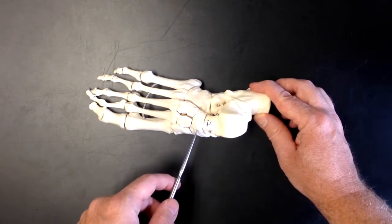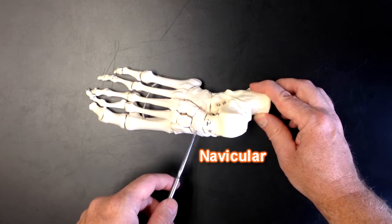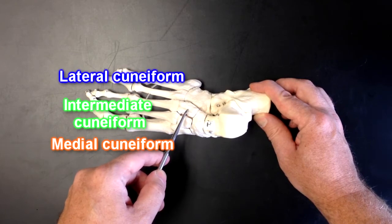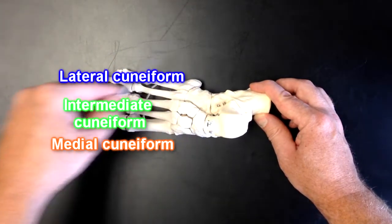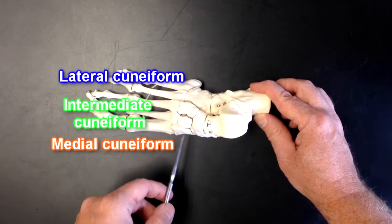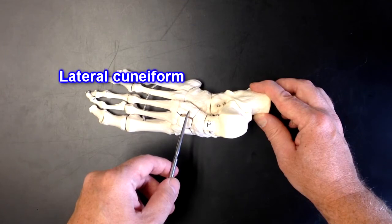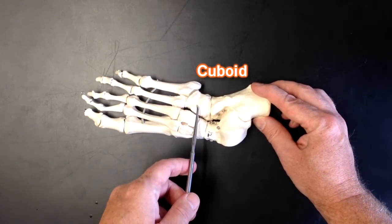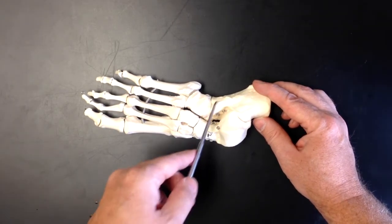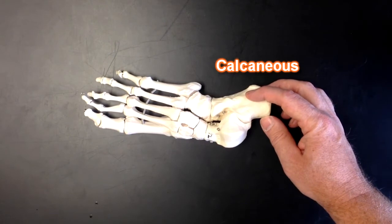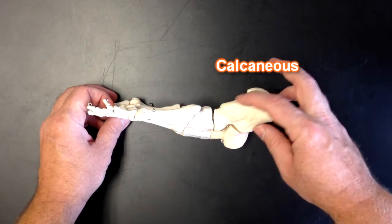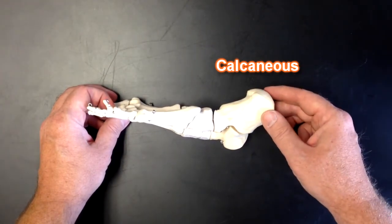The next bone down would be the navicular, and then we've got the medial intermediate and lateral cuneiform. This is the lateral aspect of the foot. So medial intermediate and lateral cuneiform, sometimes they're called cuneiform one, cuneiform two and cuneiform three. Then we have the cuboid bone right here. And then finally to complete our circle I go to this bone right here, this is the calcaneus, this is your heel bone. If I turn the model like this you can see this heel bone right there, that's the calcaneus.